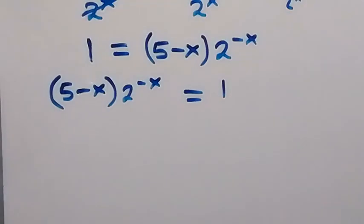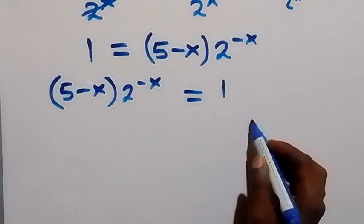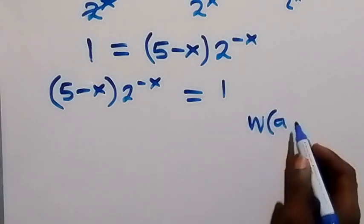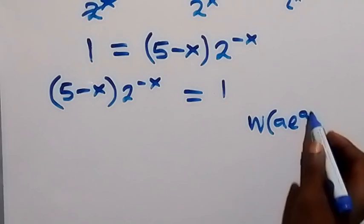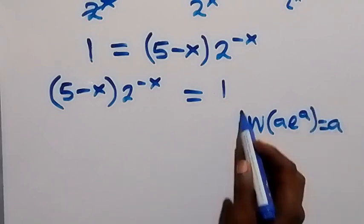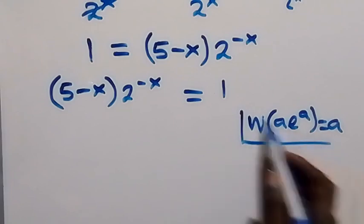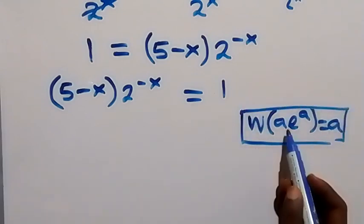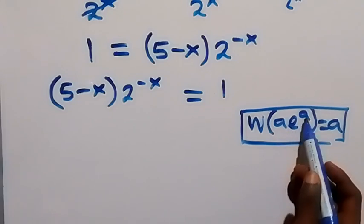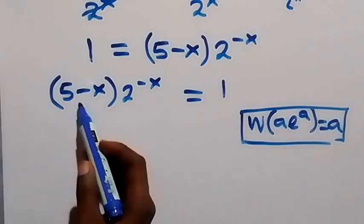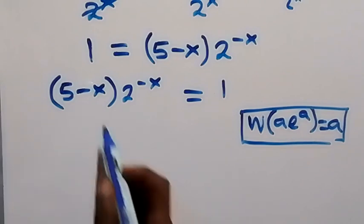From here, let's apply the W Lambert function. When we have W of a times exponent a, this is the same as a. We need to write the left-hand side in the form of a times exponent a.